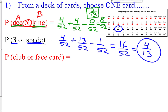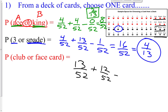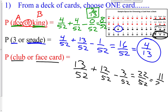What's the probability of getting a club or a face card? There are 13 clubs out of 52, plus 12 face cards (three per suit: jack, queen, king across four suits) out of 52, minus the overlap — clubs that are also face cards. There are three of those. So 13 + 12 - 3 = 22/52, which reduces to 11/26.